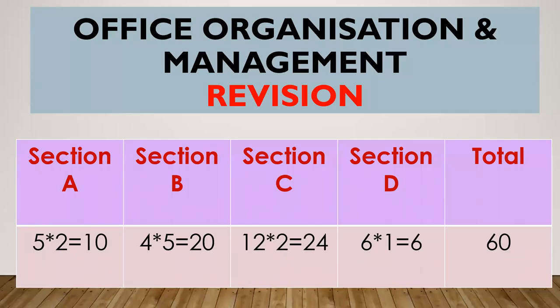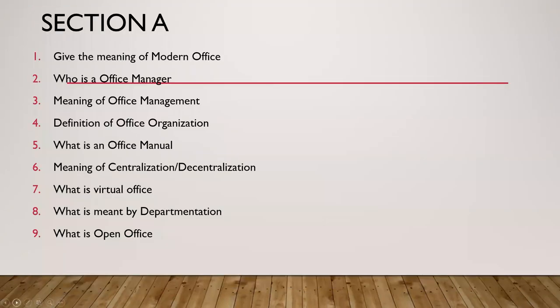Open elective paper: Office Organization and Management. Let's discuss the question paper pattern and most likely questions for revision. There are four sections: A, B, C, and D. Section A is for two marks, B is for five marks, C is for 12 marks, and D is for six marks. In Section A, answer any five; Section B, any four; Section C, any two; and Section D, one question. Total marks is 60 and the duration is two hours.